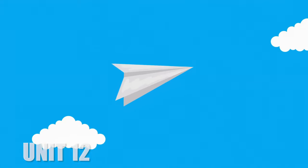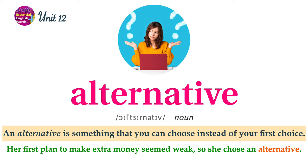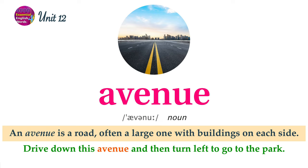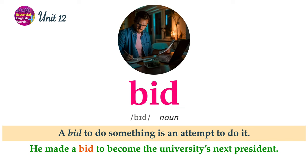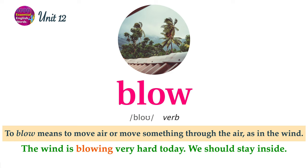Unit 12 Word List. An alternative is something that you can choose instead of your first choice. Her first plan to make extra money seemed weak, so she chose an alternative. An avenue is a road, often a large one with buildings on each side. Drive down this avenue and then turn left to go to the park. The belly is the stomach of a person or animal. His belly was full because he ate a lot of food. A bid to do something is an attempt to do it. He made a bid to become the university's next president. To blow means to move air or move something through the air, as in the wind. The wind is blowing very hard today. We should stay inside.